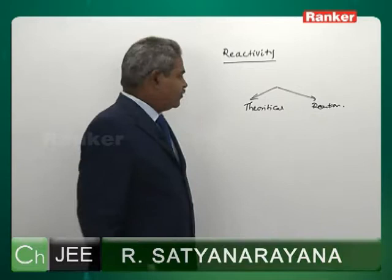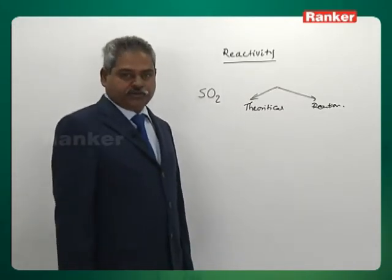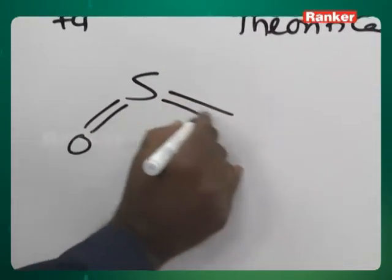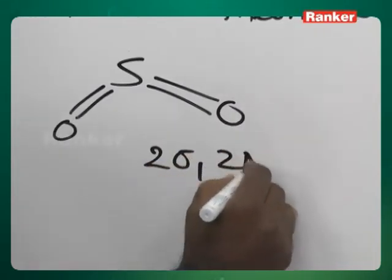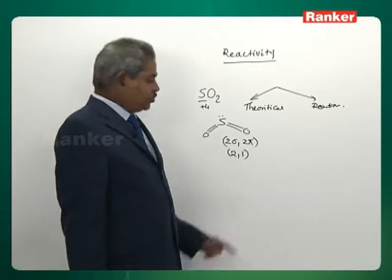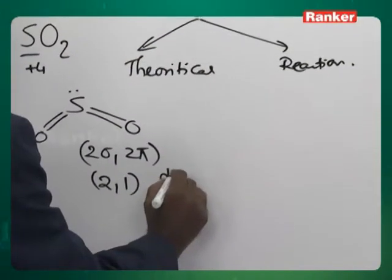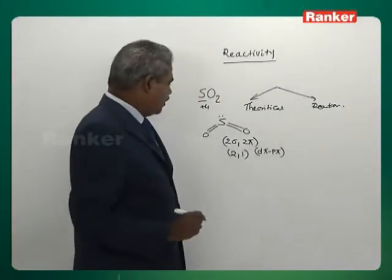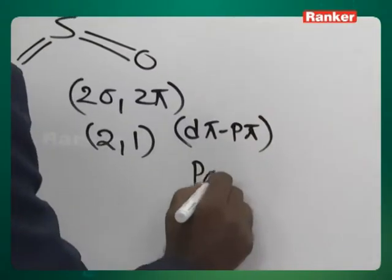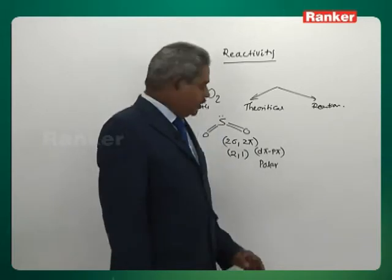What do you mean by theoretical questions? For instance, in our earlier classes, we discussed SO2. The oxidation state of sulfur is plus 4, and the structure has double bond O double bond O. It has two sigma bonds and two pi bonds, and sulfur has a lone pair — two bond pairs and one lone pair. Therefore, it has a bent structure. One of the pi bonds is a d-pi p-pi bond, where the d orbital of sulfur is involved. Since there is a lone pair, the molecule is said to be polar.